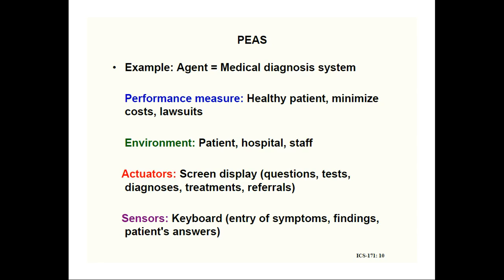Next are the sensors and actuators. The sensor is used to perceive the environment. Here, a keyboard can be used as a sensor — the patient enters their symptoms and findings via the keyboard, and the answers the patient provides are read by the sensors. The actuators' job is to display questions, give tests, diagnose, provide treatments, and make referrals. These make up the PEAS for the medical diagnosis system.